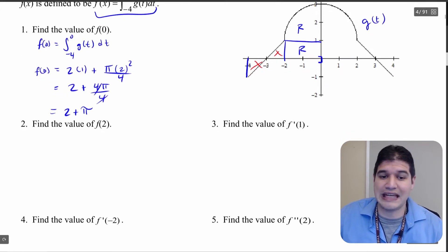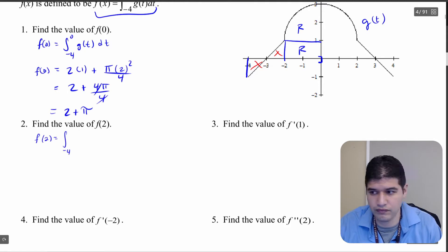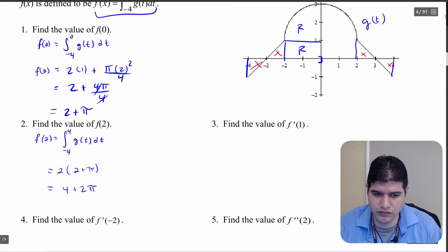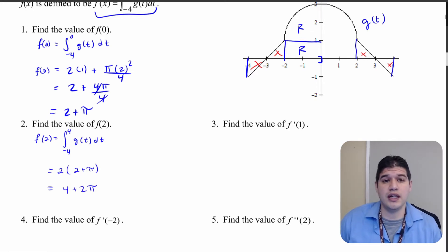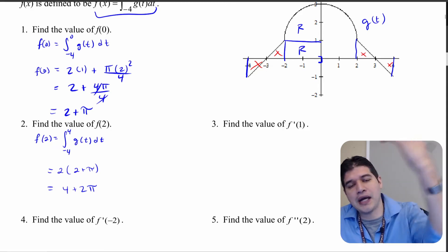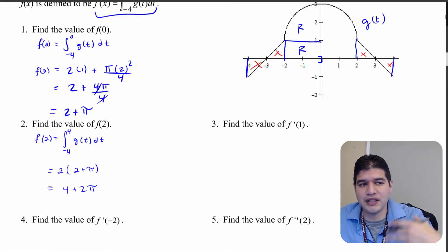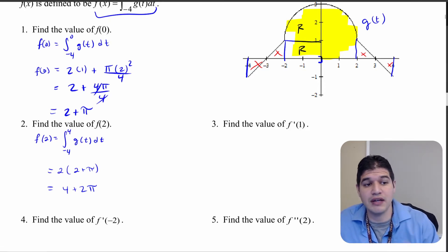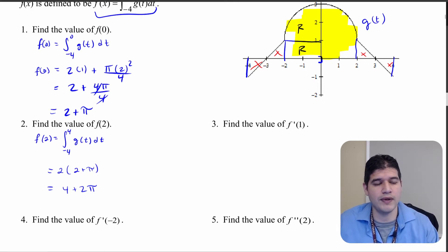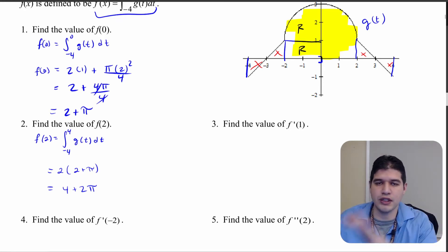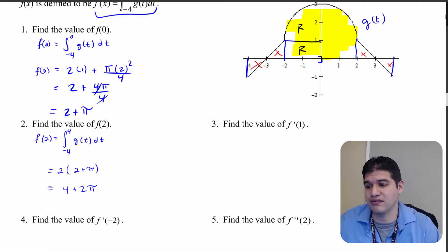Now find the value of f of 2. Substituting in 2: 2 times 2 gives 4, so the integral runs from negative 4 to positive 4. Everything in that range is what I want, because the two outer regions from negative 4 to negative 2 and from 2 to 4 cancel out. The remaining region has symmetry across the y-axis, so I just multiply my previous answer by 2 to get 4 plus 2pi.